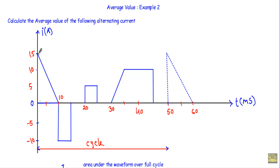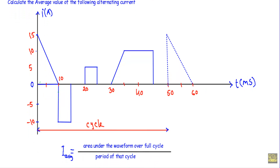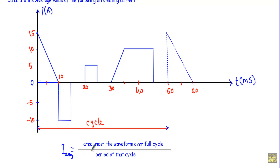This is an alternating current because it changes its magnitude from time to time all over the cycle. On the x-axis, I will take the time in the unit of milliseconds. When we have to calculate the average value of a current, we use the formula: area under the waveform — that is, the area under the alternating current curve over the full cycle — divided by the period of that cycle. The cycle of this waveform extends from 0 to 50 ms, so the period T equals 50 ms.